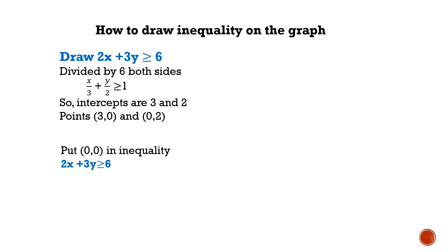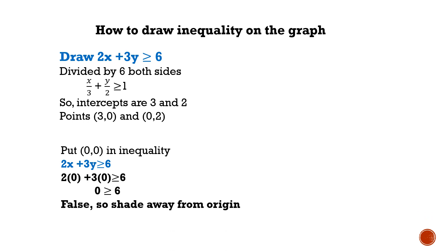To determine the shading, put the origin (0, 0) into the inequality 2x plus 3y greater than or equal to 6. After substituting (0, 0), we get 0 greater than or equal to 6, which is false. So shade away from the origin.